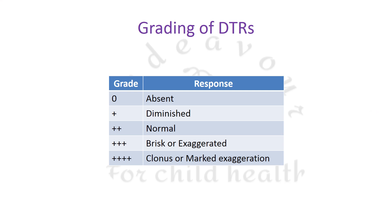Deep tendon reflexes are graded according to the severity of their response from 0 to 4+. Zero is no response; 1+ is diminished — both can be seen in lower motor neuron lesions such as Guillain-Barré syndrome. Grade 2 is a normal response; grade 3 is a brisk or exaggerated response; and grade 4 is clonus or marked exaggeration. Grades 3 and 4 are seen in upper motor neuron lesions.